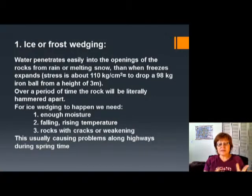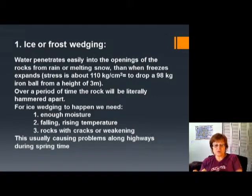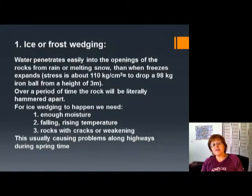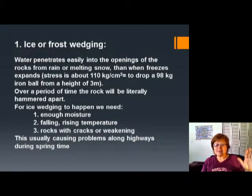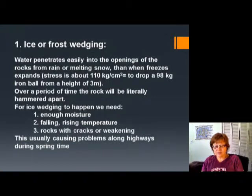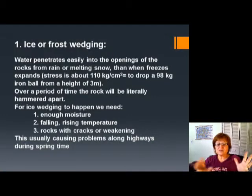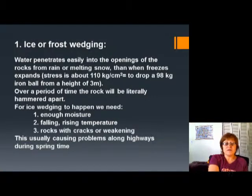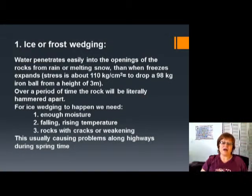What kind of environment will we see this kind of weathering? You have to have enough moisture, and you have to have falling and rising temperatures, and of course rock with cracks. The main thing is that you need a humid climate with fluctuating temperatures. This a lot of times will cause problems along the highway, especially after the spring thaw when rocks that broke apart fall off the outcrop — watch for falling rocks signs.